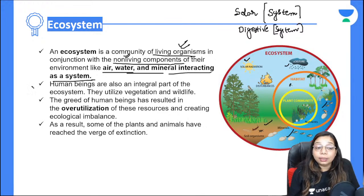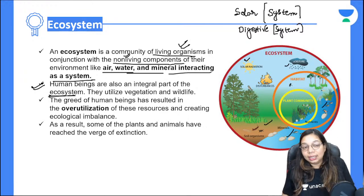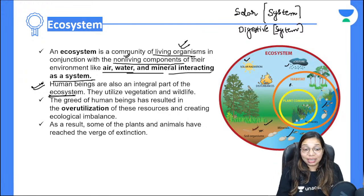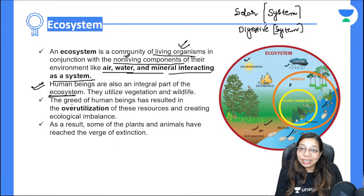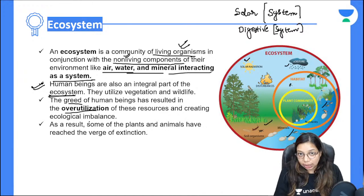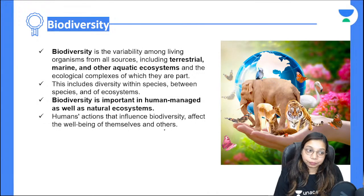Human beings are an undoubtedly important part of the ecosystem. But sometimes our greed causes over-utilization of resources, which disturbs the ecological balance. This is why some plants and animals are becoming extinct.